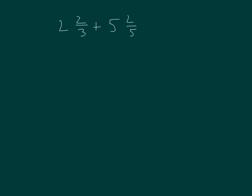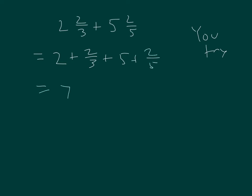Now try this one: 2 and 2 thirds plus 5 and 2 fifths. Group the whole numbers together to add those first. 5 and 2 is 7. Then we're adding together 2 thirds plus 2 fifths.